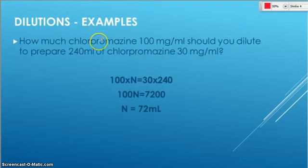Let's see how that works. How much chlorpromazine, 100 milligrams per mil, should you dilute to prepare 240 mils of chlorpromazine, 30 milligrams?